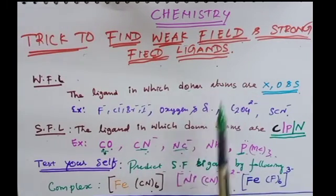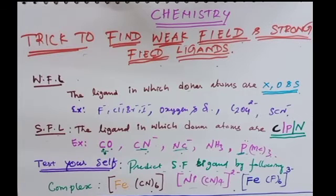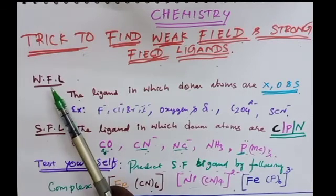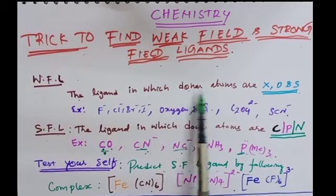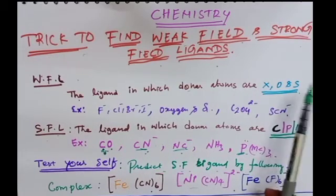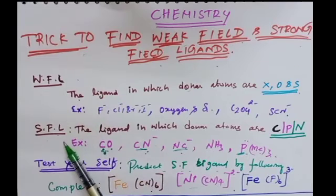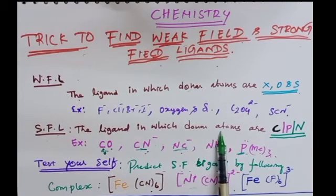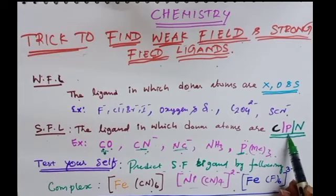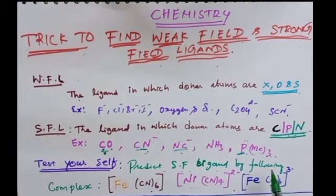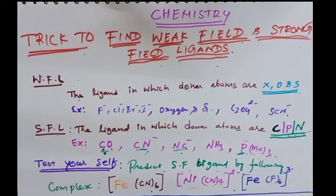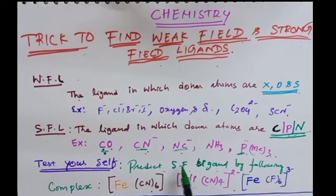The ligand which donates the electron to the central metal atom in your complex is called a ligand. Ligands are classified as weak field and strong field. The ligand in which the donor atom is carbon, phosphorus, or nitrogen — if these three are present in your complex, that is called a strong field ligand. For more examples, refer to this video.